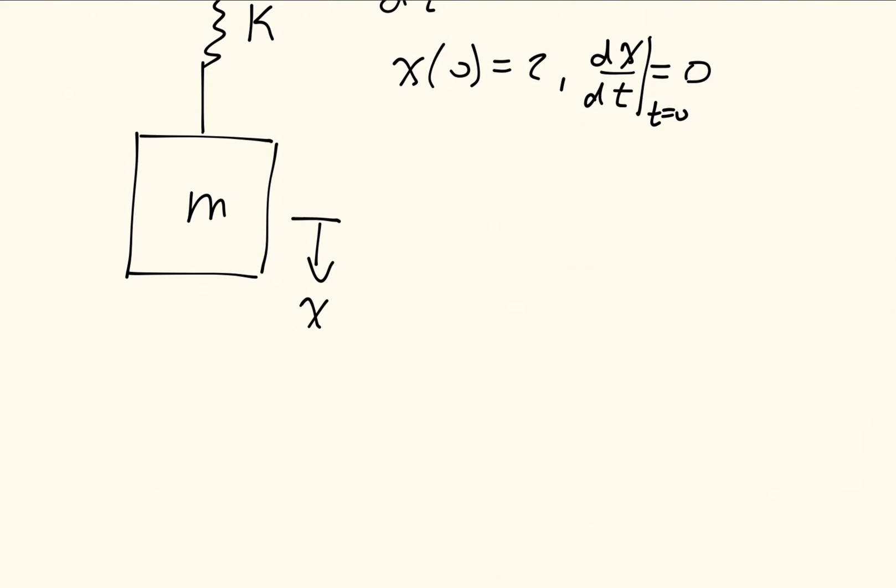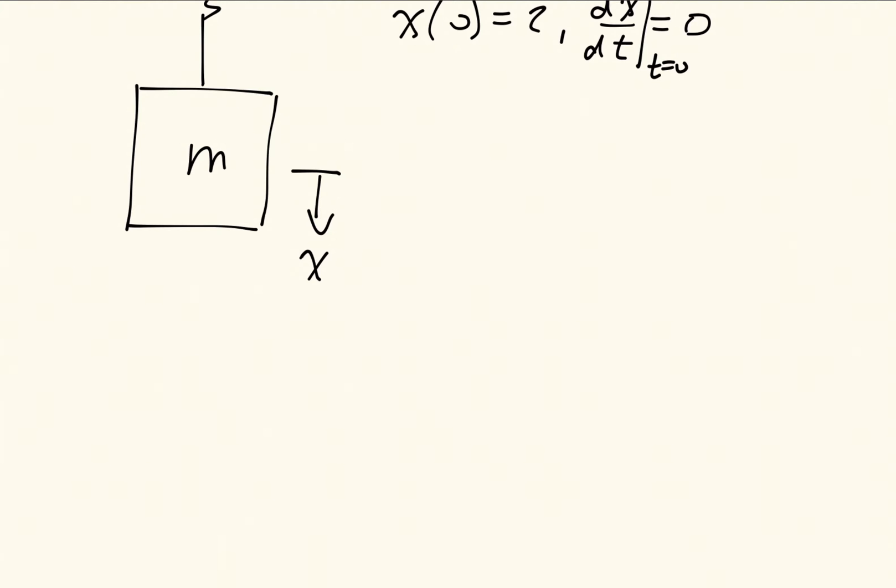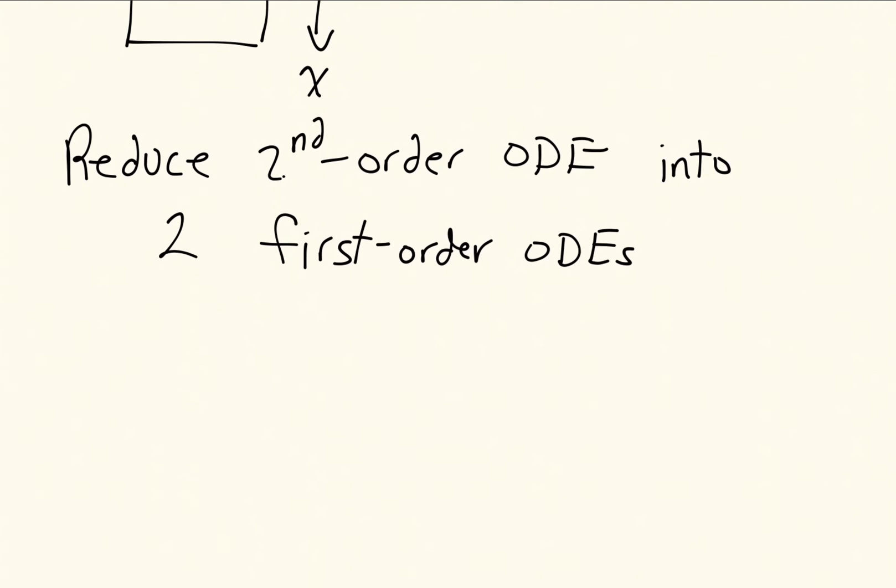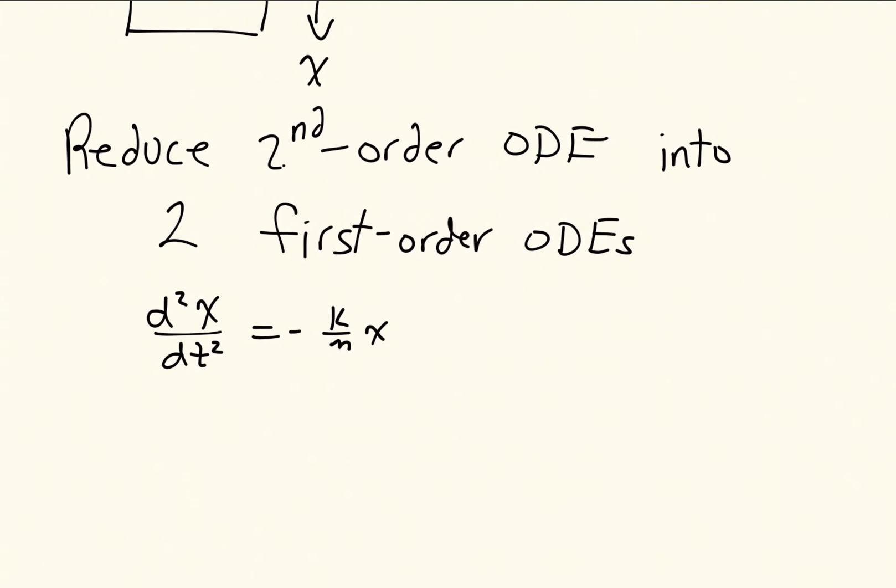So the first problem is to reduce the second-order ODE into two first-order ODEs. And for this problem, that's pretty easy. Because we can rewrite this equation as d squared x dt squared is equal to minus k over m times x. So I just rewrote the differential equation. I haven't done anything else. So that's still our second-order differential equation.